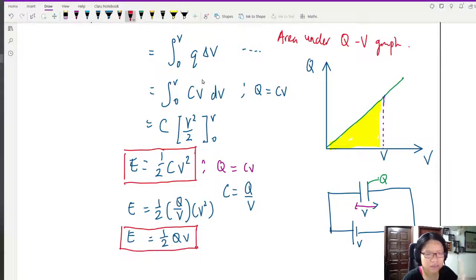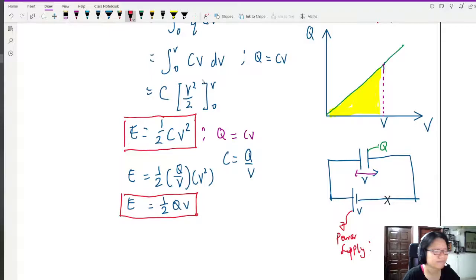Okay, so you might be thinking, miss, the power supply gives out the energy of QV, but this capacitor only stores half QV. Where did the half go? What do you think? Aha, it's lost. Lost where? Think about it. Want to blame who? It's not half the plate. Think about it. Where did the half go? Okay, I'm going to derive the other one first.